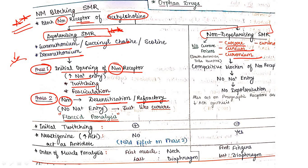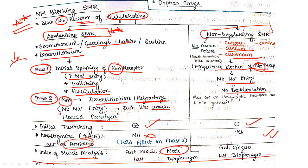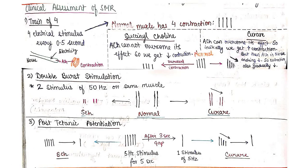Non-depolarizing SMR simply blocks the NM receptor completely — no sodium entry, no depolarization, so initial twitching is absent. If neostigmine is given as an antidote to a depolarizing SMR, it has no effect because receptors are desensitized; but neostigmine does work for non-depolarizing SMR. The order of muscle paralysis: fingers are paralyzed first, diaphragm last.